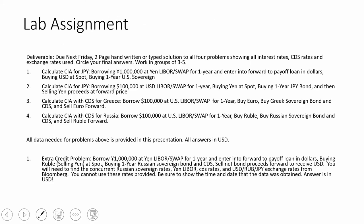There is also an extra credit assignment. For the required problems, all data is in this PowerPoint. For this extra credit problem, you will need to go to Bloomberg. Say it is 10 minutes sitting — gather all the interest rates you need. The assignment: borrow 1 million yen at the yen swap or LIBOR rate, enter a forward contract to pay it off in dollars. You will need the yen LIBOR for one year and the forward price of the dollar-yen to pay off the loan.